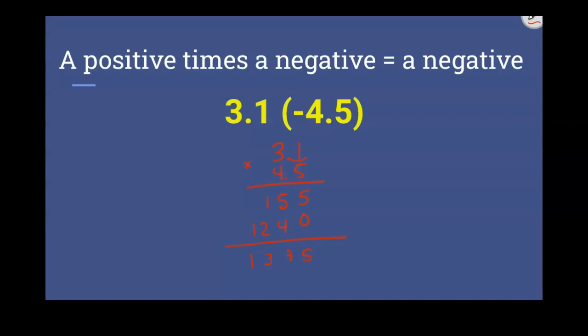Remember at the end, since we have two decimal points right here, we're going to move the decimal 2 back. And we have an answer of 13.95. But because it's a positive times a negative, we're going to have negative 13.95.